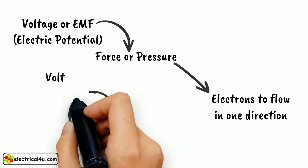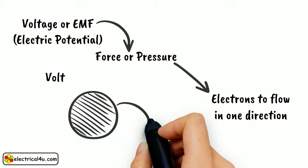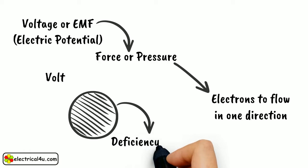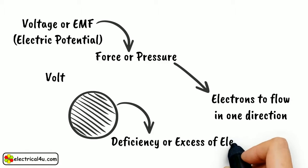Suppose a body is electrically charged. That means the body has either deficiency of electrons or excess of electrons.